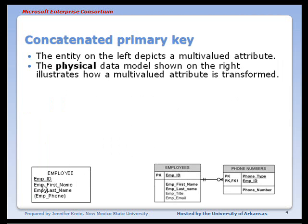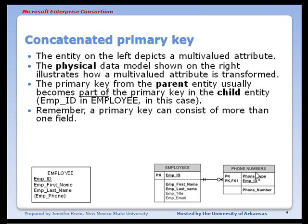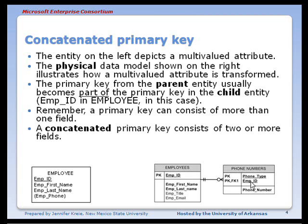Our employee entity with the multi-valued attribute is shown on the left. The physical design for the data model shows how that is transformed. You would move the multi-valued attribute out and make it a separate entity — it's sometimes referred to as a child in its relationship to its parent entity. The primary key for the phone number entity is going to have two fields in it. Remember, a primary key can have more than one field or attribute making up that primary key. If you have more than one field, it's often referred to as a concatenated primary key. So we have a parent entity called employee and a child entity that makes part of the primary key the foreign key it has from its parent entity.